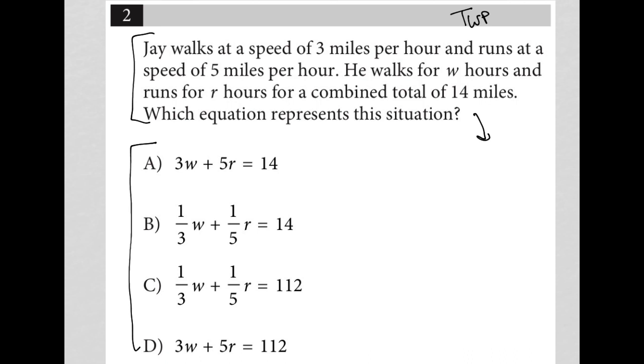So the first sentence here says Jay walks at a speed of three miles per hour and runs at a speed of five miles per hour. All right. So walk is three and run is five. Next sentence.